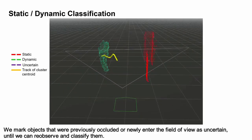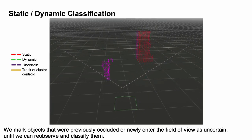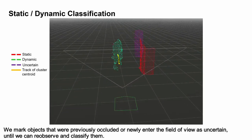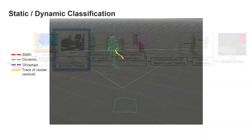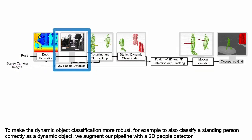We mark objects that were previously occluded or newly entered the field of view as uncertain until we can re-observe and classify them. To make the dynamic object classification more robust,